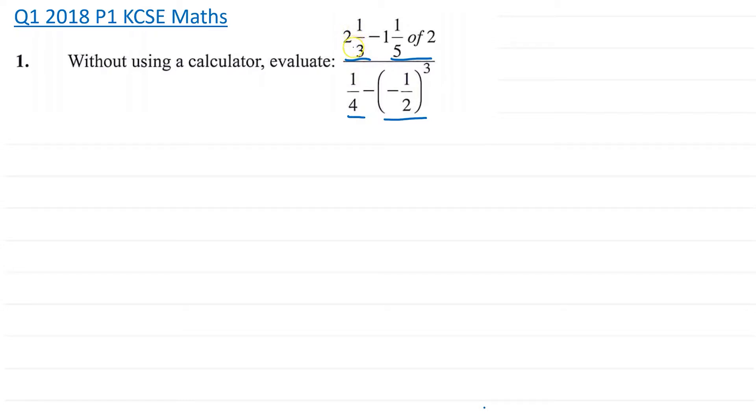So we're going to convert this mixed number into an improper fraction. So 2 times 3 is 6, add 1 is 7. So that part becomes 7 over 3. And then we're going to take away, let's just change this one here.